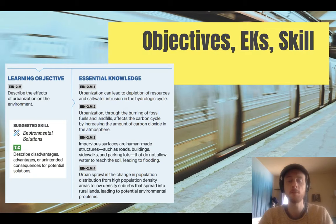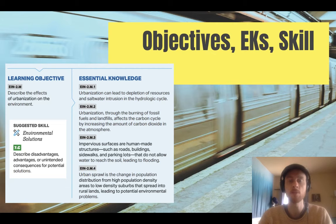Our objective for the day is to describe the environmental effects of urbanization. We'll talk about how it can lead to saltwater intrusion and increased fossil fuel combustion, and therefore CO2 emission into the atmosphere. We'll discuss how urbanization replaces pervious land with impervious land — land that does not allow water to infiltrate into the ground. We'll discuss why urban sprawl is occurring, the process of population distribution heading from dense cities out to less dense suburbs.